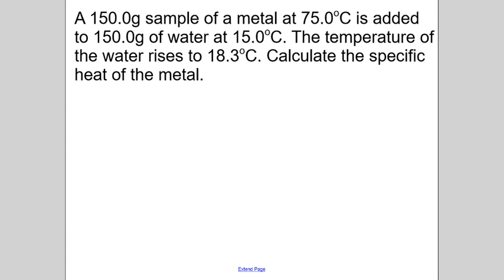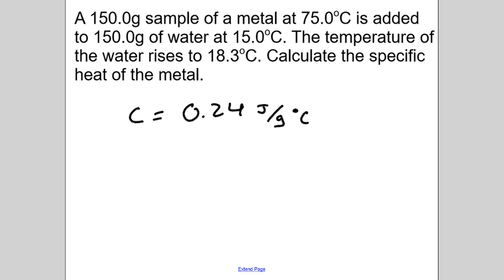The very last problem is similar: an unknown sample is mixed with water, with known initial temperatures for both the metal and water. This is a good one to practice by yourself — pause the video and try it out. The answer: c for this unknown metal equals 0.24 joules per gram per degree Celsius. That concludes this video — let us know if you have any more questions and have a good rest of your day.